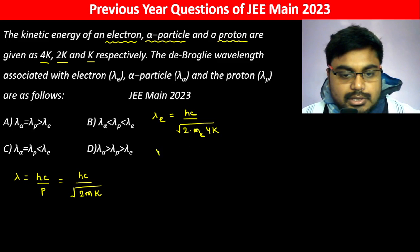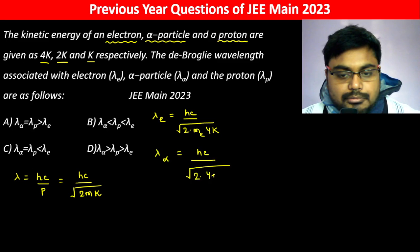Lambda of alpha particle ho jayega hc divided by root over 2 into, alpha particle ka 4 hota hai, 4...